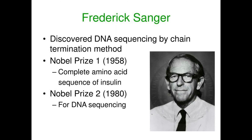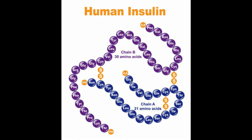Evidence for the one gene one polypeptide hypothesis: How does DNA encode protein structure? In 1953, English biochemist Frederick Sanger described the complete sequence of amino acids of insulin. Sanger's evidence was significant as it demonstrated for the first time that proteins consist of a definite sequence of amino acids. It was revealed that all enzymes and other proteins are strings of amino acids arranged in a certain definite order.